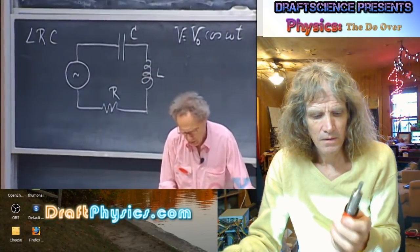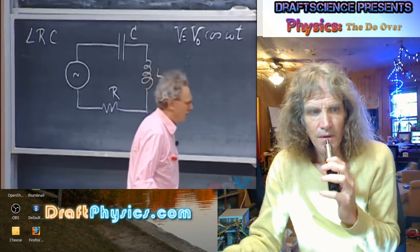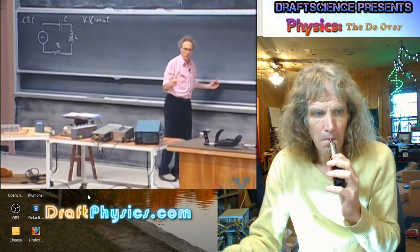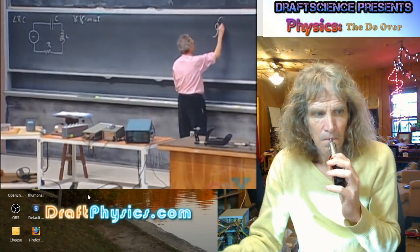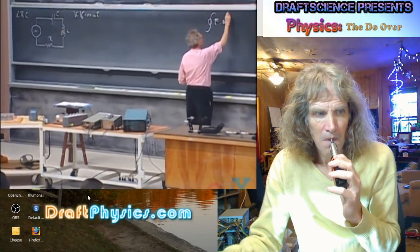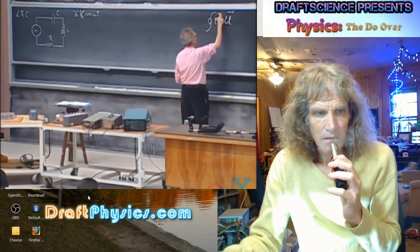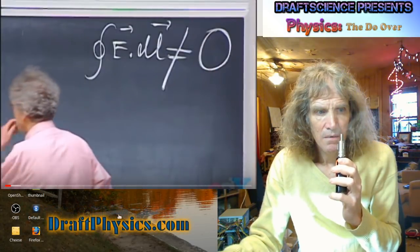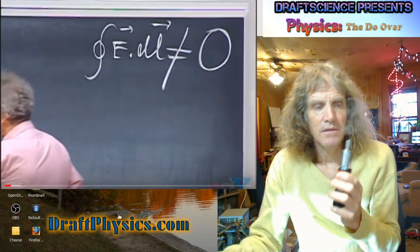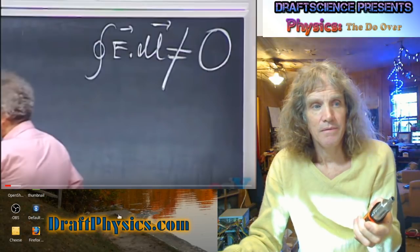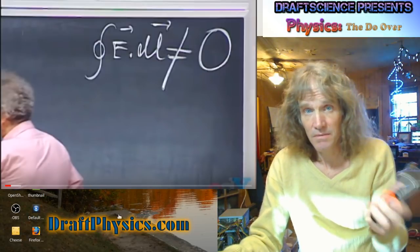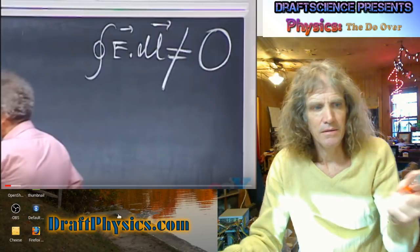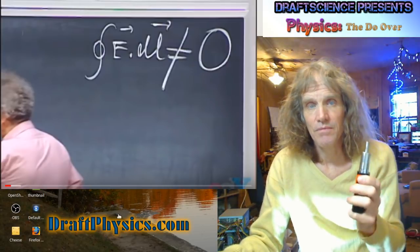We have to set up the differential equation for this, and I want to remind you that Kirchhoff's loop rule does not hold. The closed loop integral of E dot dl, in spite of what the author of your book wants you to believe, is not zero. So he says that, but it does work out the same. He says it, but it's not true.